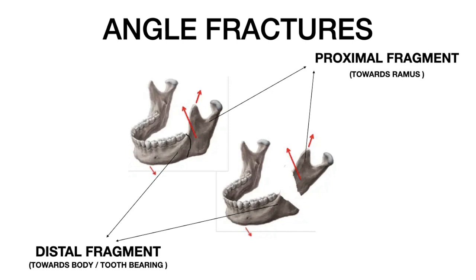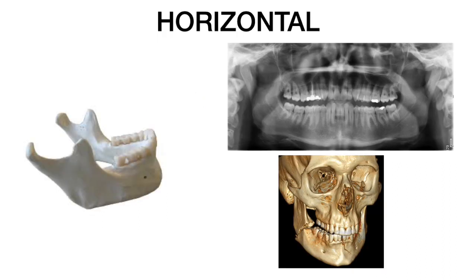Whenever there is a fracture, it results in a discontinuity of the bone, usually resulting in the formation of two segments. In an angle fracture, there is a proximal fragment, which is the fragment towards the ramus, and a distal fragment, which is towards the body or the tooth-bearing area.